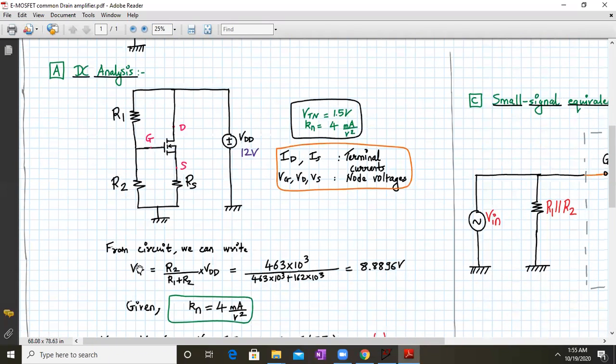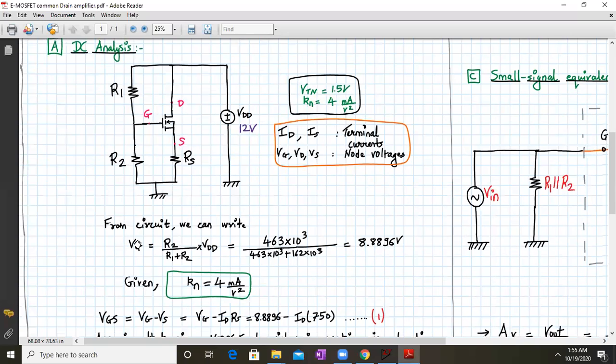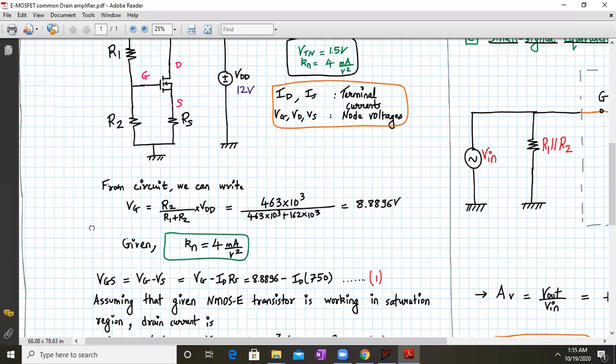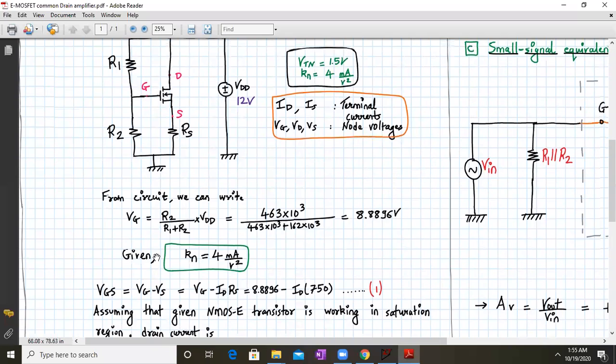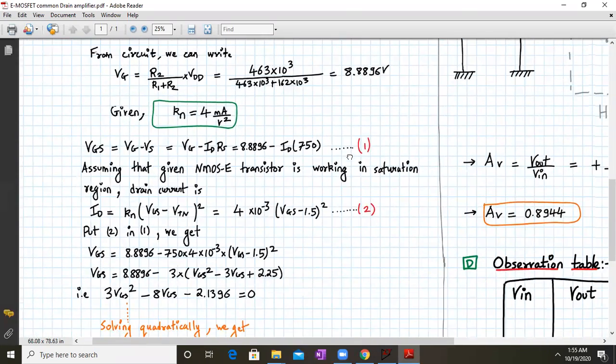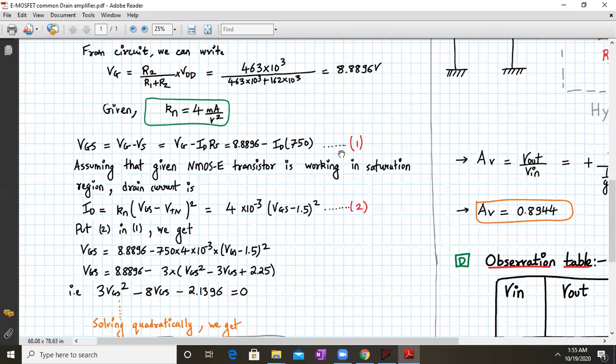First we determine Vg, which is given by R2 divided by R1 plus R2, times Vdd. This equals 8.896 volts. Then Vgs equals Vg minus Vs, which is 8.896 minus Id times Rs, where Rs is 750 ohms. This is equation number one.